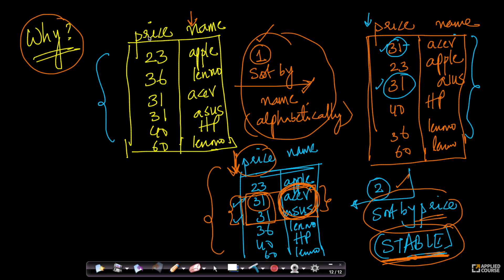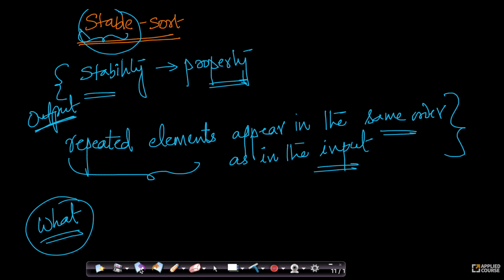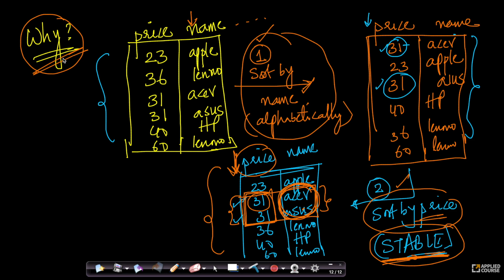When you want to sort by multiple columns of data, you might want items with the same price to be sorted by the next column — name — and so on. This can be done for multiple columns; you could have a table with tens of columns and sort one after another. As long as all your sorting algorithms are stable, you are guaranteed to have this property preserved. I hope you understood what stability in a sorting algorithm is and why it is important in the real world.